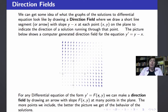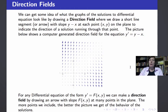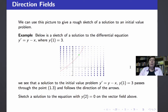The picture given here is a computer-generated direction field for the equation y prime equals y minus x. It draws a short arrow with slope y minus x for any given point x, y on the plane. We can use this direction field to give a rough sketch of a solution to an initial value problem by following the arrows.